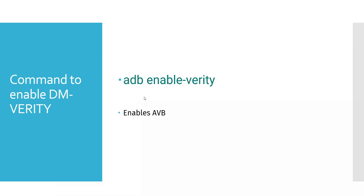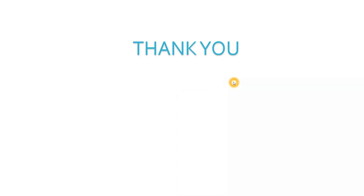The command to enable DM Verity is 'adb enable-verity'. Just use disable and enable to switch Android verified boot on or off. In this tutorial I have explained the concept of DM Verity and the commands to enable and disable it. I hope this was informative and helpful. In my next session I'll explain how the hash techniques and key matching work — take care, thank you everyone!